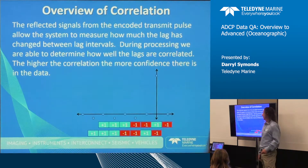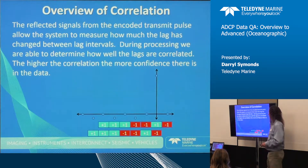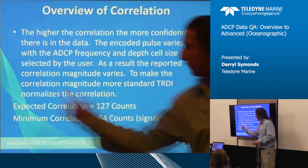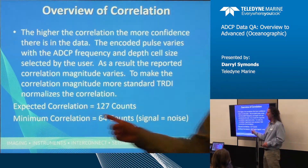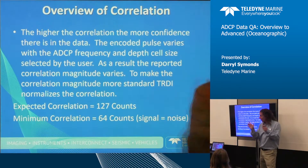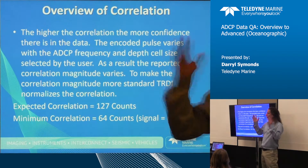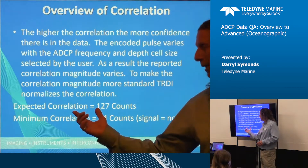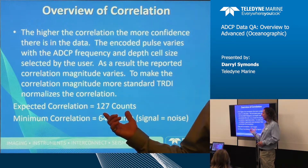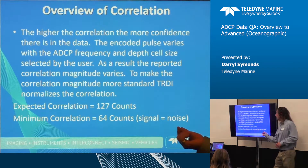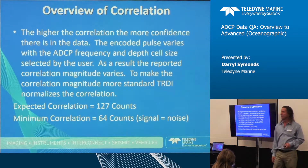The key thing about correlation is how we scale it. In all ADCPs except the Ocean Surveyor, the expected correlation equals 127 counts. Because the number of sequences varies as I change bin size — smaller bin size means fewer sequences and the raw correlation would move all over the place — we figure out what the expected correlation should be and assign it a value of 127 counts so you don't have to think about it. When it falls below 64 counts, that means signal equals noise, and we mark the data bad. This is done independently on every ping, every bin, and every beam.